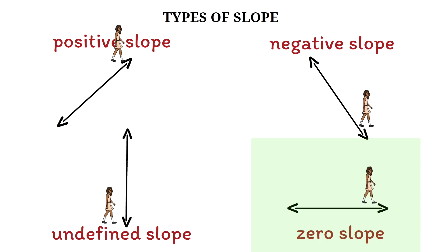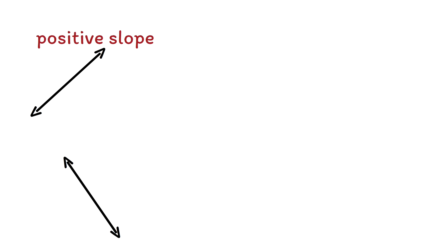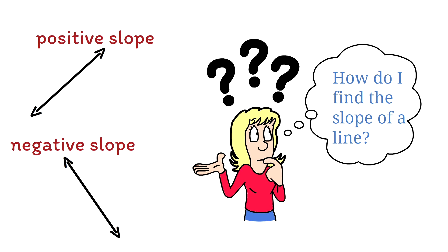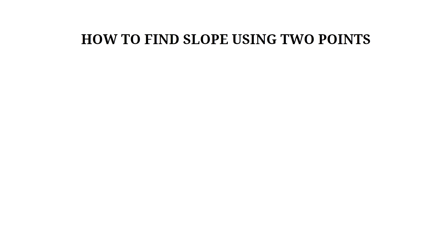Now that we understand the different types of slope, let's take the next step. It's one thing to look at a line and say that's a positive or negative slope, but it's another thing to calculate the exact slope. The method you use depends on the information you're given. Let's begin with the most basic situation: finding the slope when you're given two points.